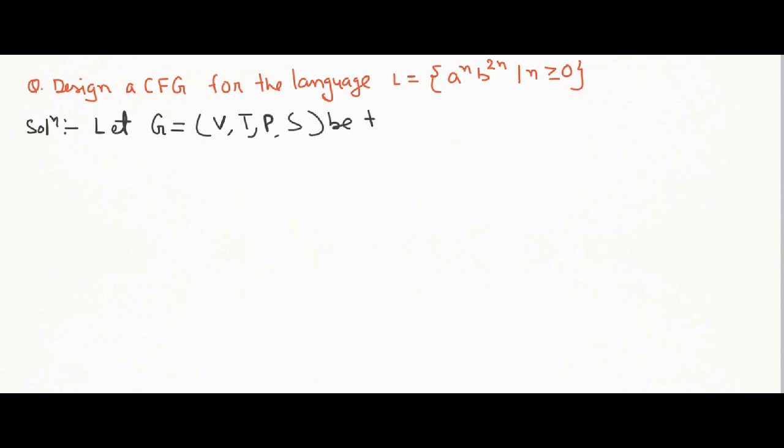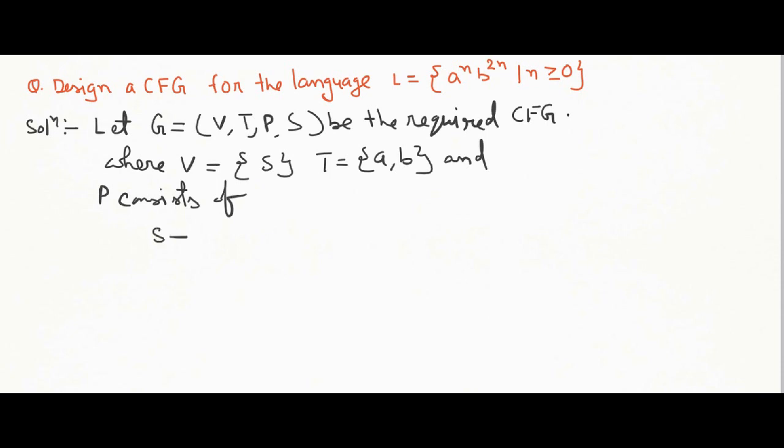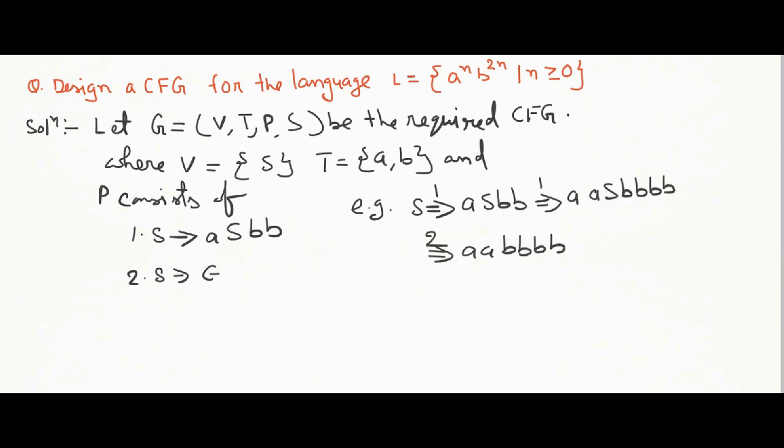L equals A and B twice of N. So we are going to have the grammar as such. Production rules are S equals A and B 2n, S is epsilon. Suppose we are going to apply the production rules. And you can see that we are having A and B 2n and value of N.